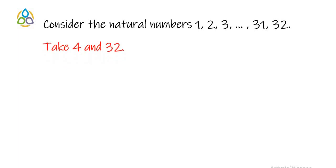Now among these natural numbers take 4 and 32. What is the sum of 4 and 32? If we add them, it is 4 plus 32 equal to 36 and 36 is a perfect square number. That means we can write 36 as 6 into 6. So 36 is equal to 6 square.